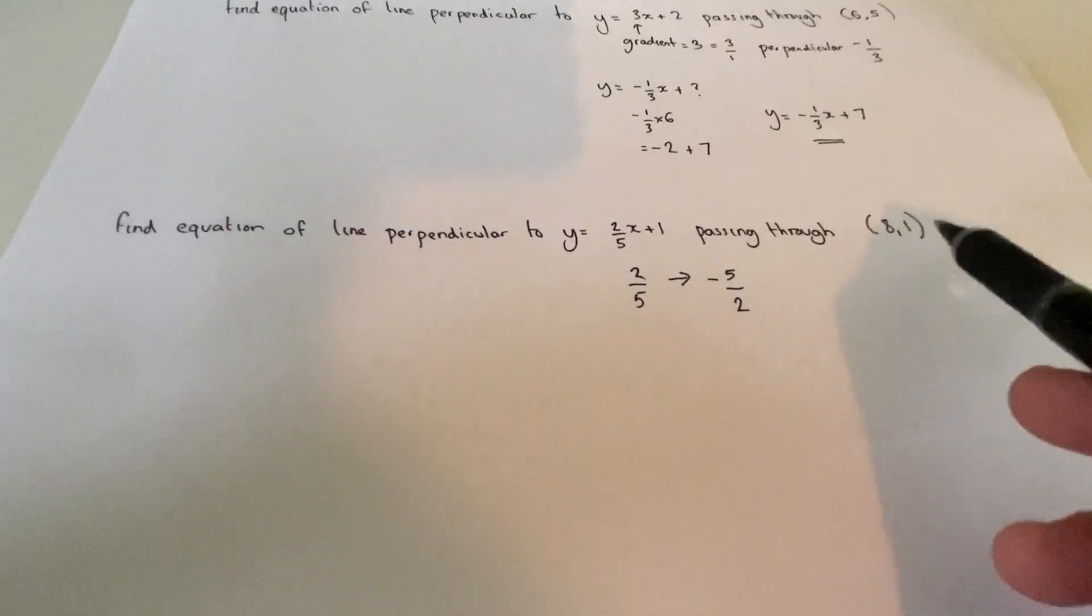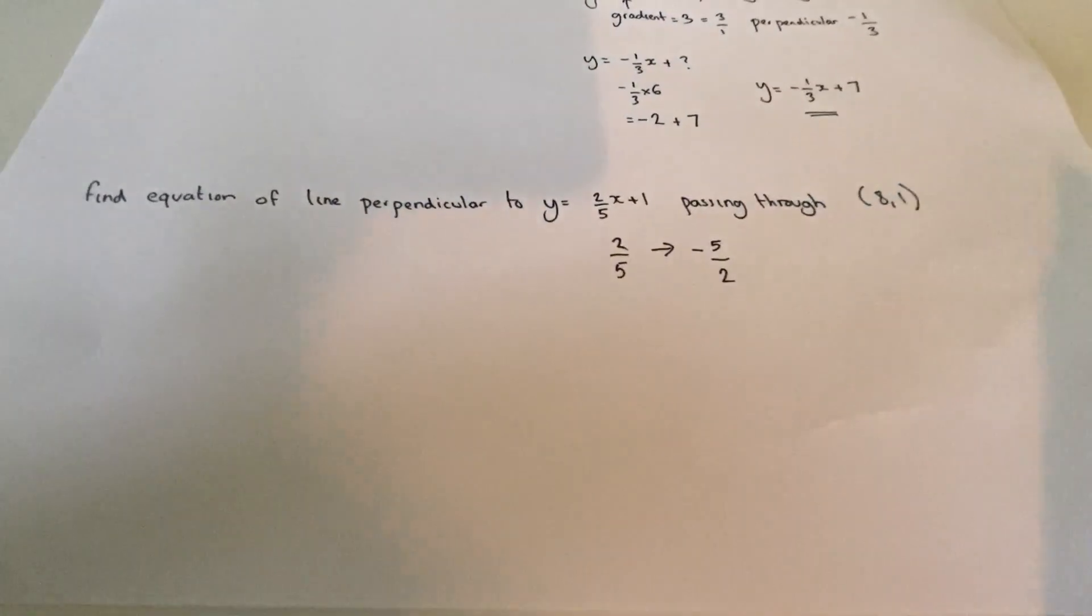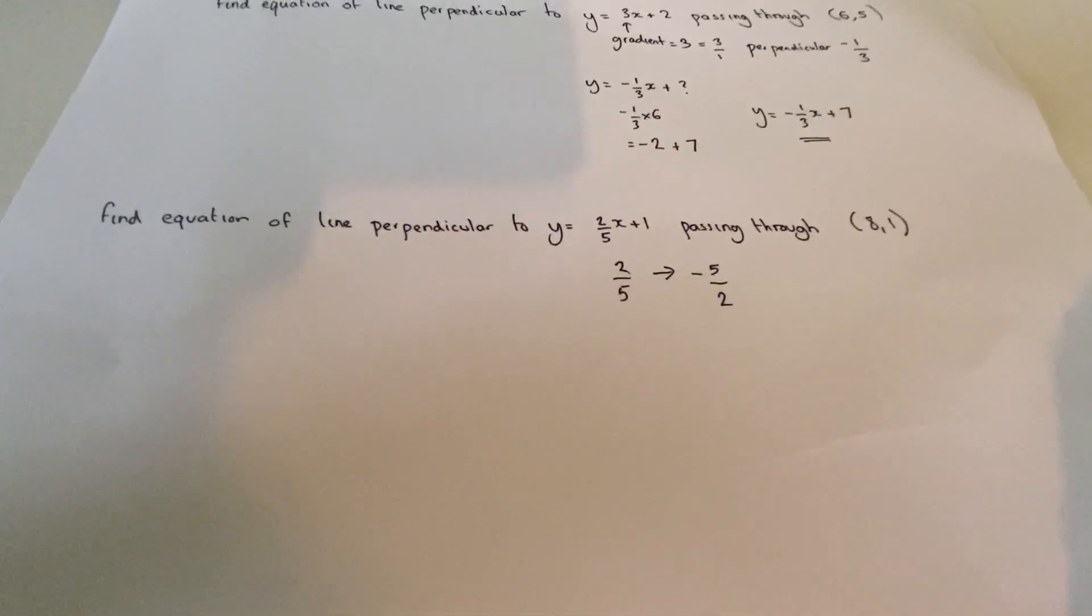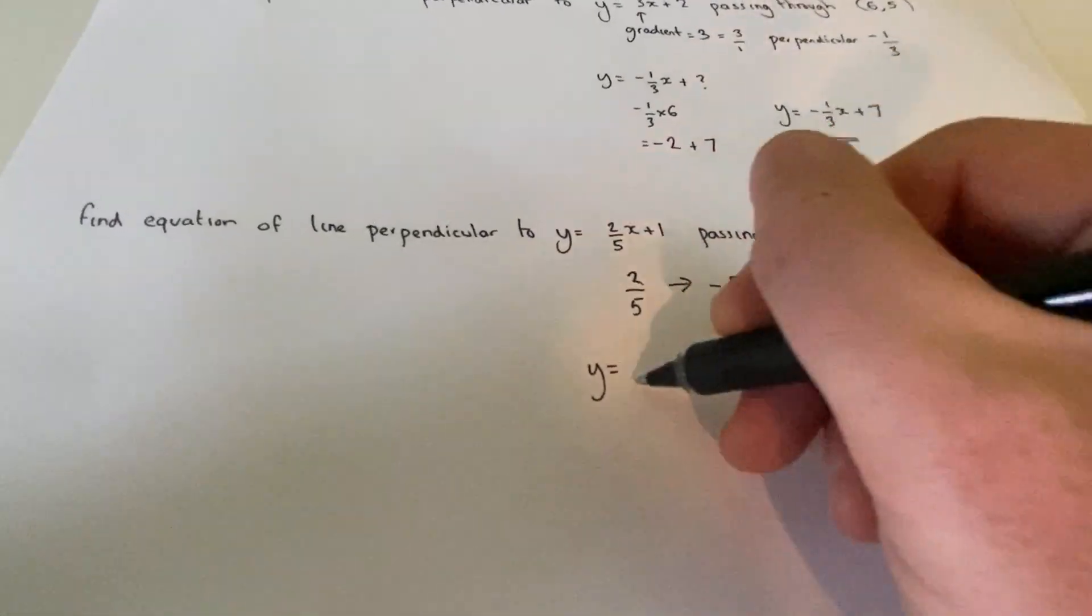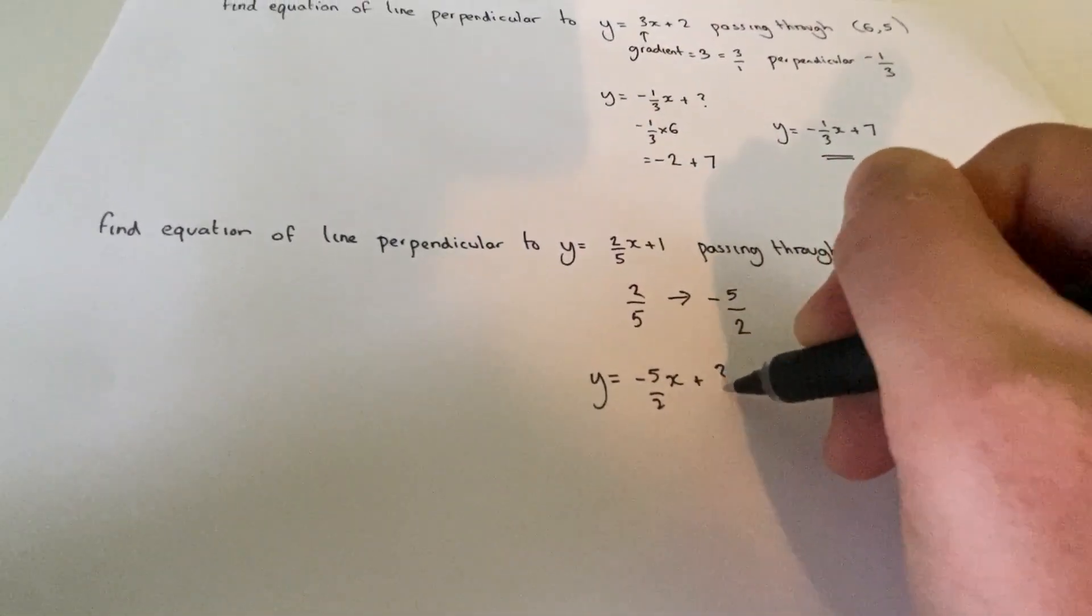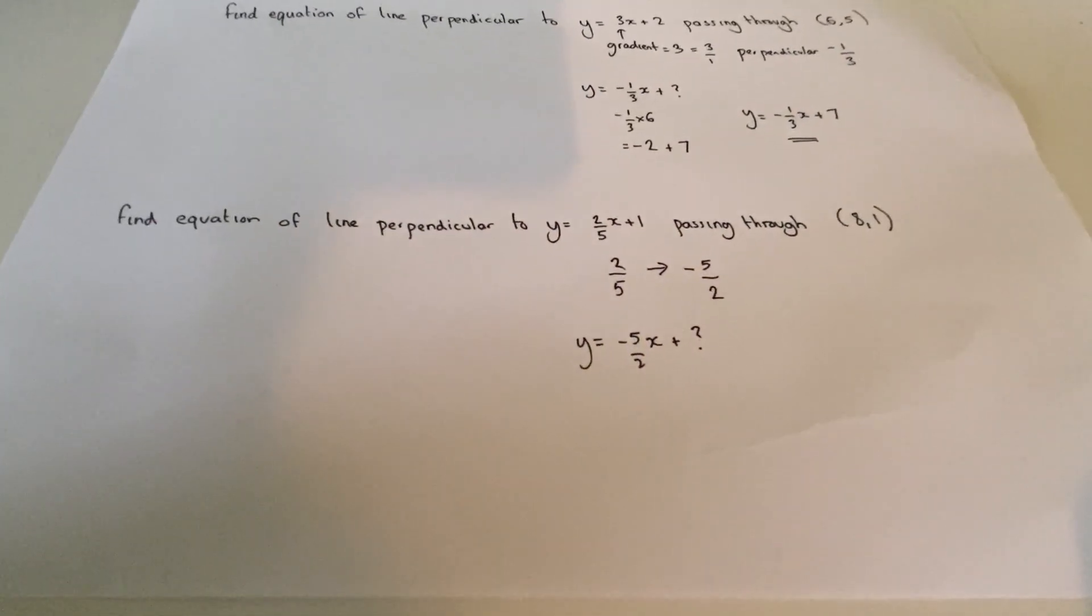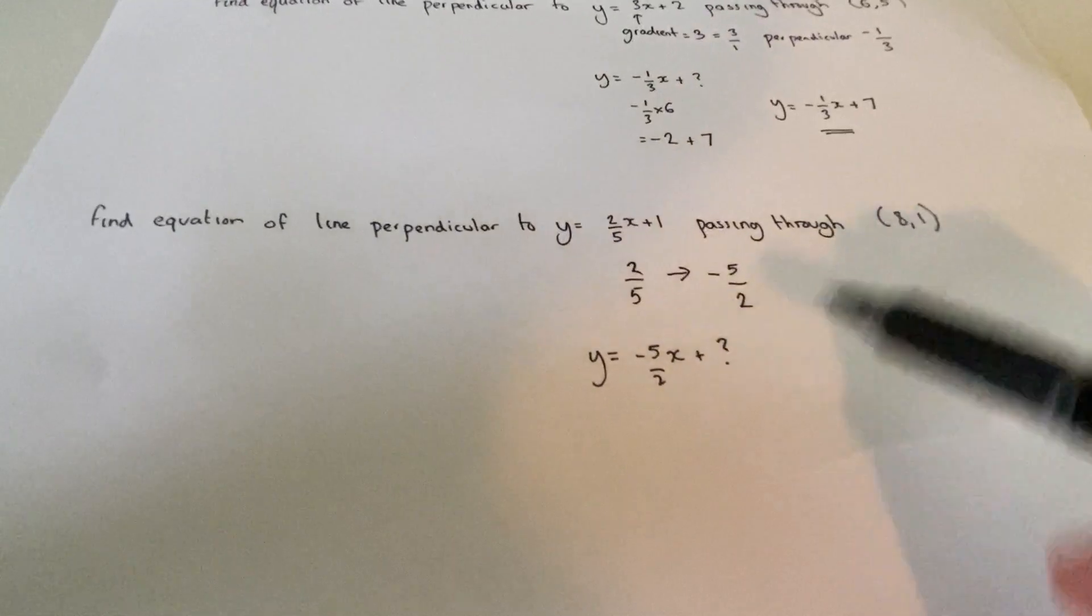And it now passes through a new coordinate. So the y-intercept, which was plus 1, will have changed. So rather than 2 fifths as a gradient, it now becomes y equals minus 5 over 2x plus some unknown y-intercept. But the key point is that if I put x equals 8 into this equation...